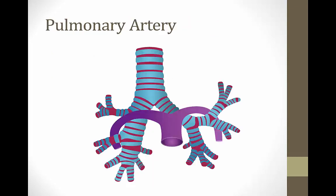They like you to know the relationship of the pulmonary artery to the trachea and bronchi. The right pulmonary artery goes anterior to the right bronchus — it's in front. The left pulmonary artery, on the other hand, goes superiorly to the left bronchus — it goes over the top — and this is sometimes tested on boards.